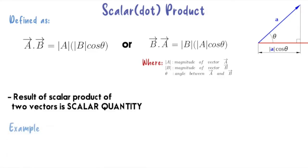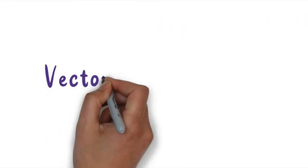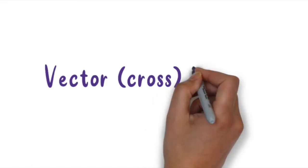The result of scalar product of two vectors is known as scalar quantity. Work done is one of the example of scalar product. Okay, next we move to vector or cross product.